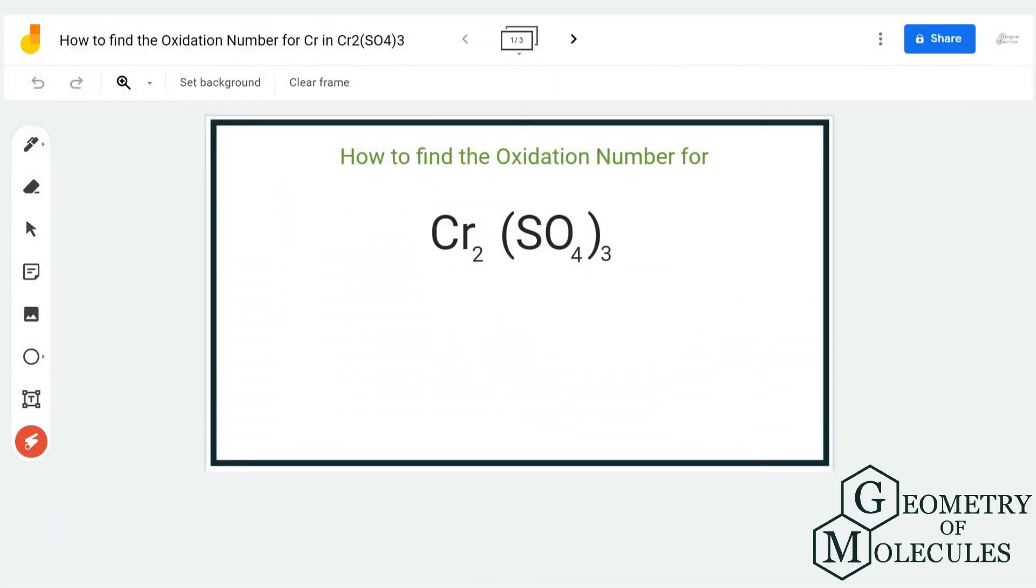Hi guys, today in this video we are going to find out the oxidation number for chromium in Cr₂(SO₄)₃. To find out the oxidation number, we first check the total charges on the compound. As you can see, there are no negative or positive charges, which means it's a neutral compound.